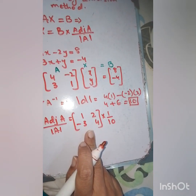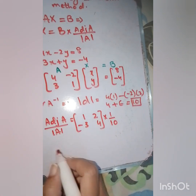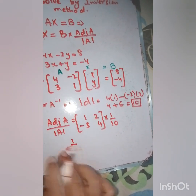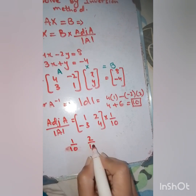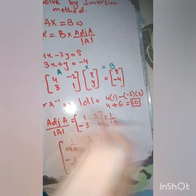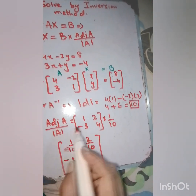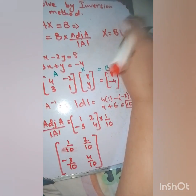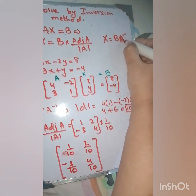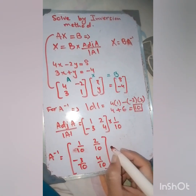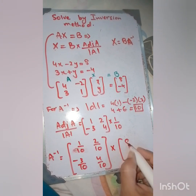So A inverse equals the adjoint upon the determinant, which we can write as 1 upon 10 multiplied by the adjoint matrix. Each entry is divided by 10, giving us: 1/10, 2/10, minus 3/10, and 4/10. This completes A inverse. Now we multiply it with matrix B, which is 8 and minus 4.